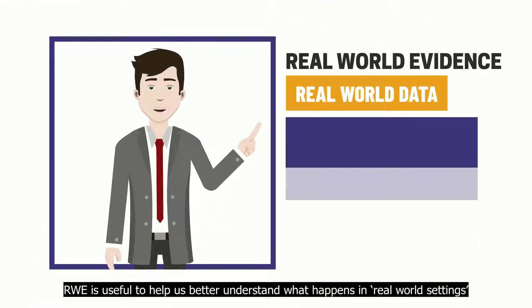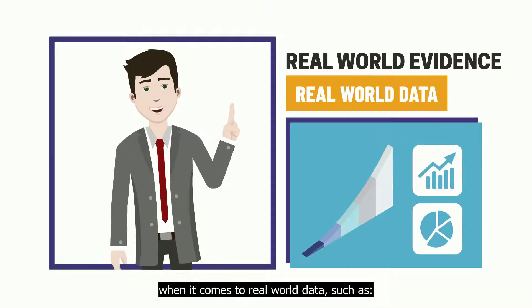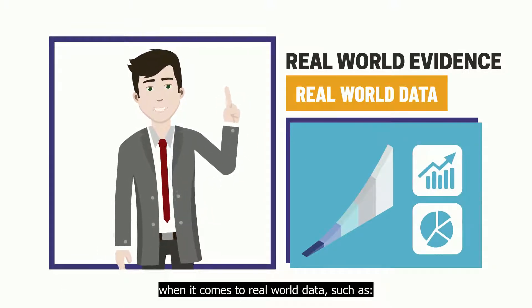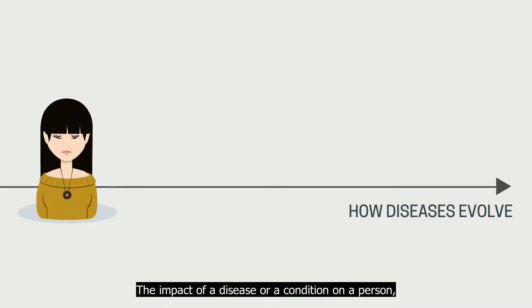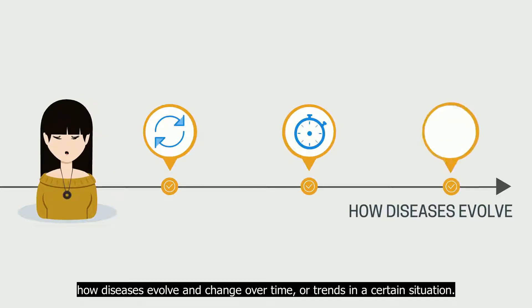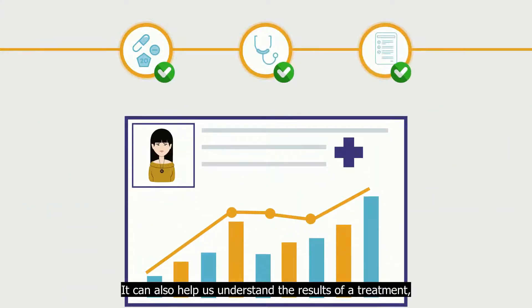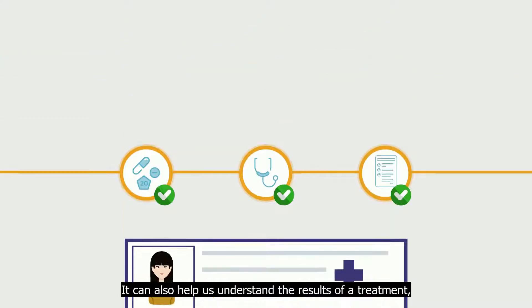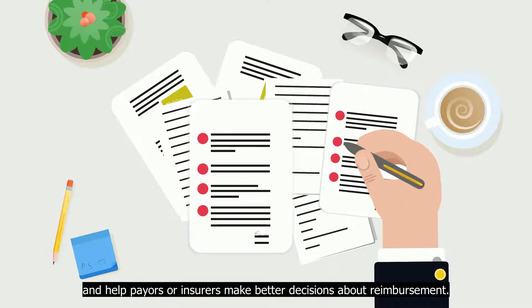RWE is useful to help us better understand what happens in real-world settings, such as the impact of a disease or condition on a person, how diseases evolve and change over time, or trends in a certain situation. It can also help us understand the results of a treatment, how treatments can impact results, and help payers or insurers make better decisions about reimbursement.